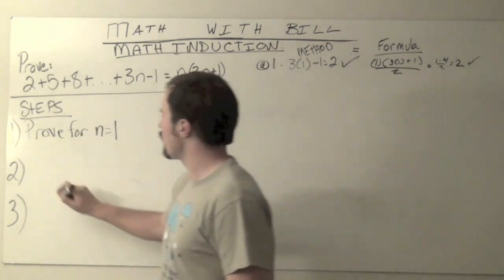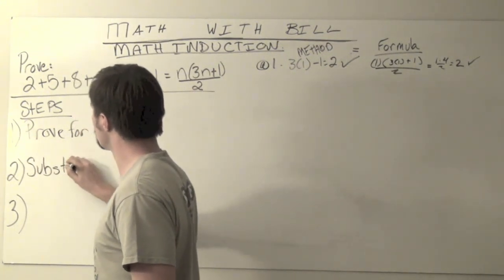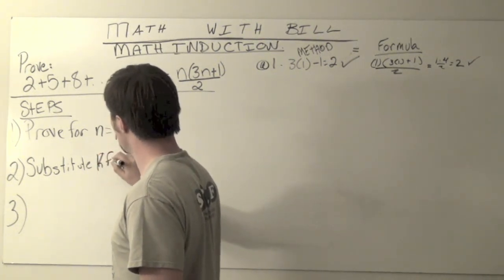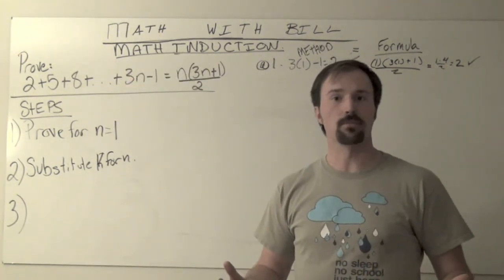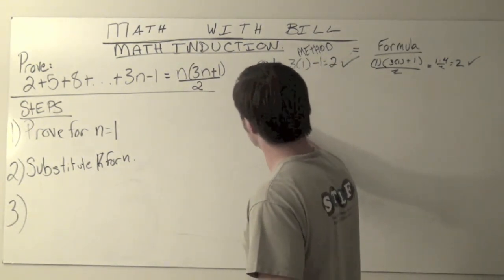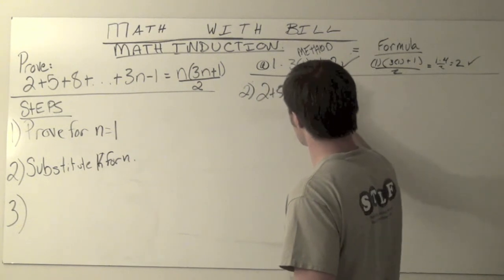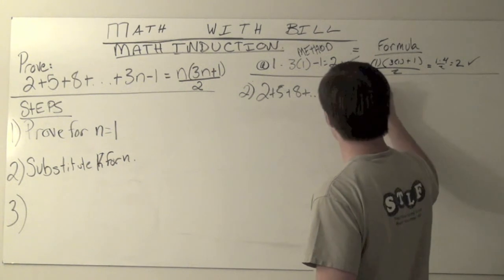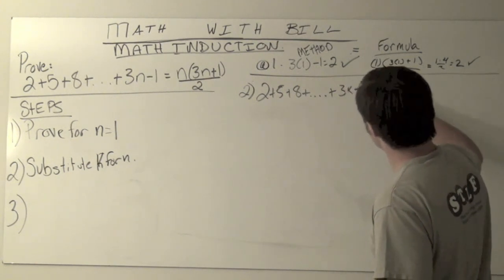Step 2 is take and substitute the value k for n. Okay, so this one's kind of simple but it gets pretty important. What we're basically saying here is step 2 is now we've got 2 plus 5 plus 8 plus out to 3k minus 1.